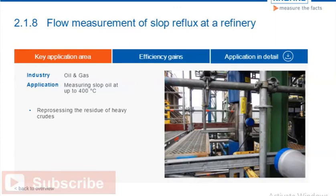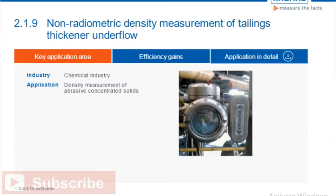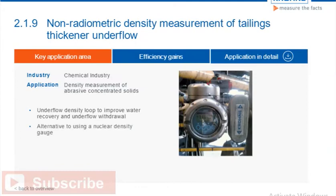A coal handling and preparation plant uses a density thickener as part of a tailings disposal system. Traditionally, radiometric density measurement has been employed on thickener underflow lines to measure abrasive concentrated solids streams. To avoid the high total cost and regulatory requirements, a more environmentally friendly flow meter replaced a nuclear density gauge in measuring the density of abrasive concentrated solids.